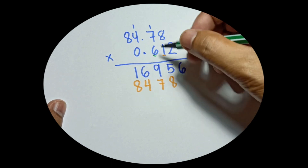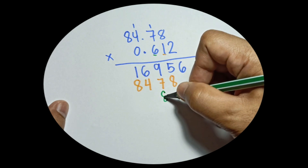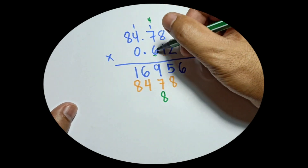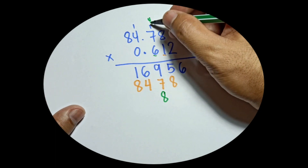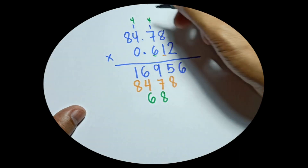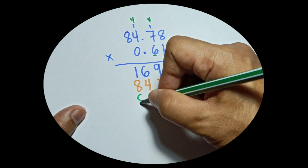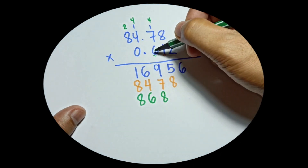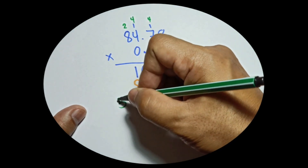For digit 6, write the answer on the third line: 6 times 8 is 48, carry 4 on top of 7. 6 times 7 is 42 plus 4 is 46, so write 6 and carry 4 on top of 4. 6 times 4 is 24 plus 4 is 28, carry 2 on top of 8. 6 times 8 is 48 plus 2 is 50, write 50.